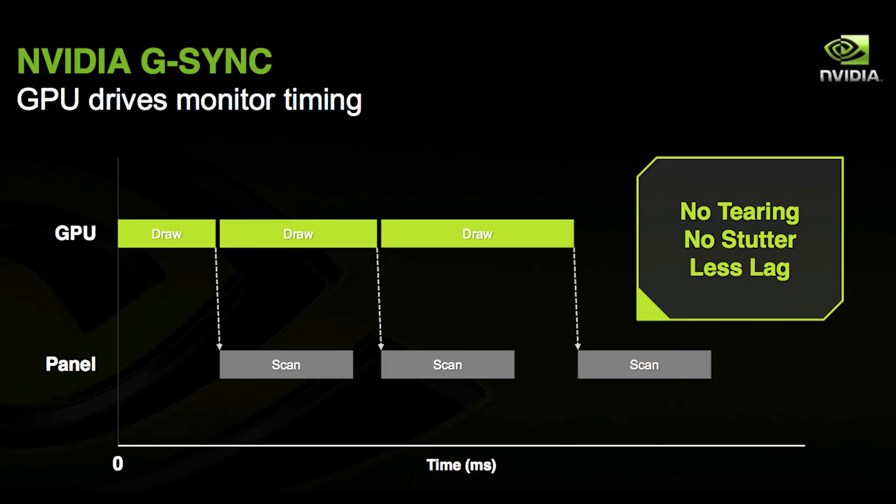With adaptive refresh rate technologies like G-Sync and FreeSync, the way they work is effectively the graphics card tells the monitor when to refresh. You will always see the full output of your GPU without tearing and without frame limiting, which is awesome — it looks beautiful and is just such a cool technology with great gaming experiences. Let's start with G-Sync.